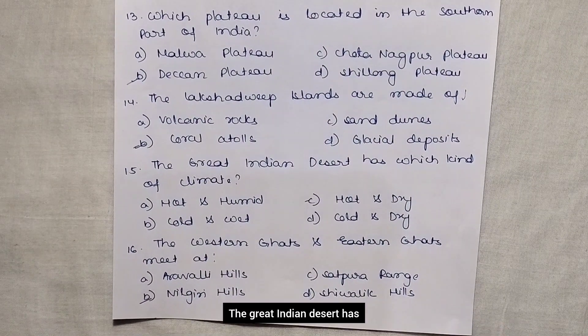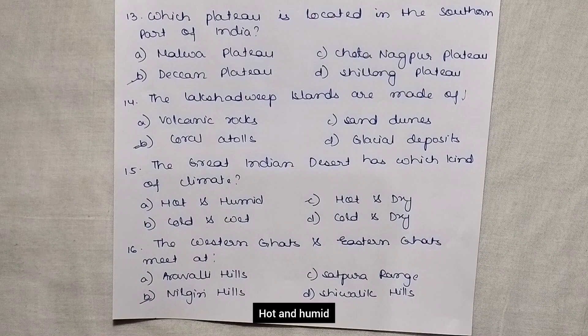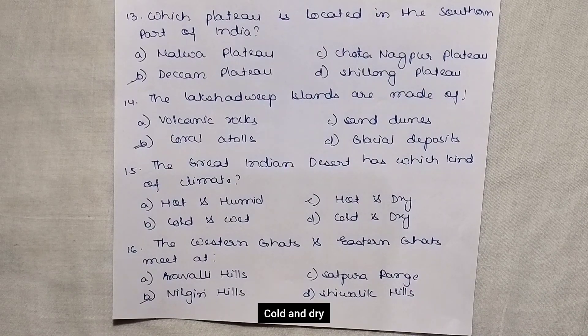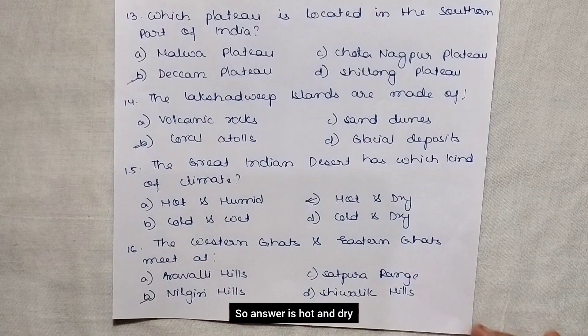The great Indian desert has which kind of climate? The options are hot and humid, hot and dry, cold and wet, and cold and dry. The answer is hot and dry.